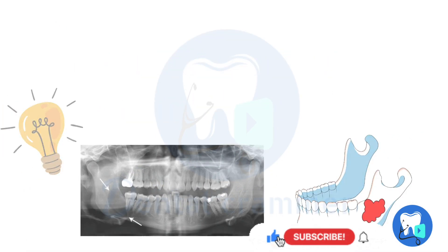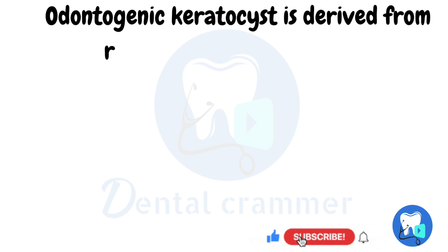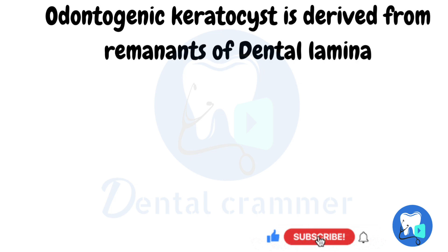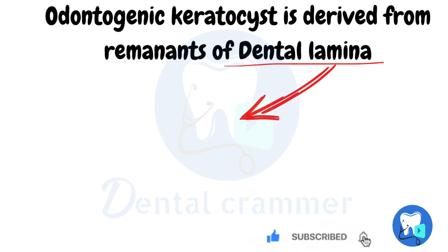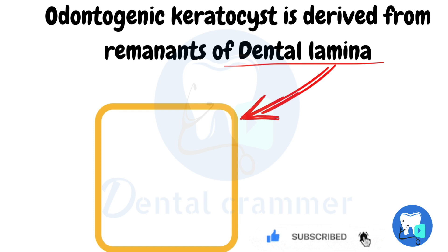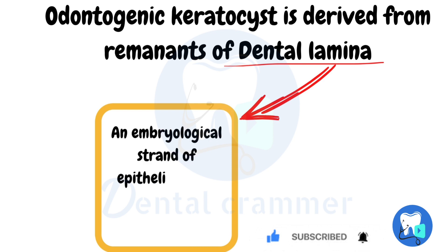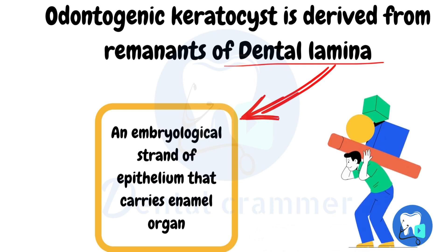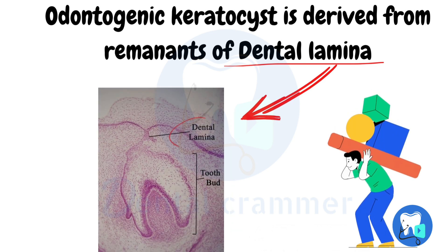Odontogenic keratocyst is derived from the remnants of dental lamina. Dental lamina denotes an embryological strand of epithelium that carries the tooth part.